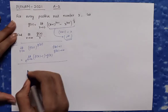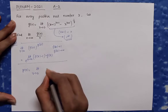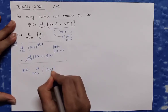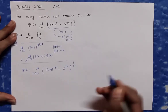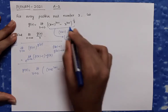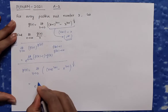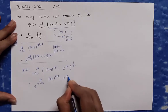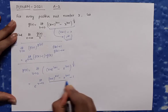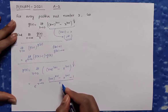Let's start solving g(x). We rewrite g(x) = limit as r tends to 0 of [(x+1)^(r+1) - x^(r+1)]^(1/r). Since it is the 1^∞ form as proved earlier, I apply the formula directly and write: e raised to the power of [limit as r tends to 0 of ((x+1)^(r+1) - x^(r+1) - 1) × (1/r)].